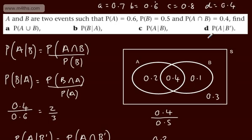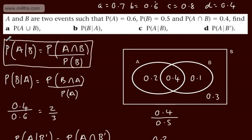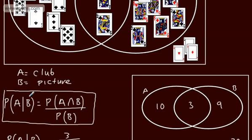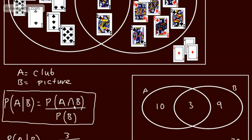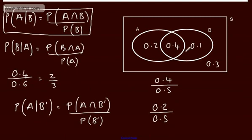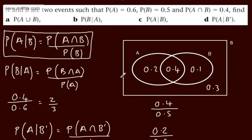In some later videos, we'll look at independent probability and the multiplication formula in terms of independent probability. The take-home message is: the probability of A given B has already happened is the probability of A and B divided by the probability of B, which can be written in many different forms. You could work these from Venn diagrams, but I personally think it's much easier to use the formula and plug in the numbers.